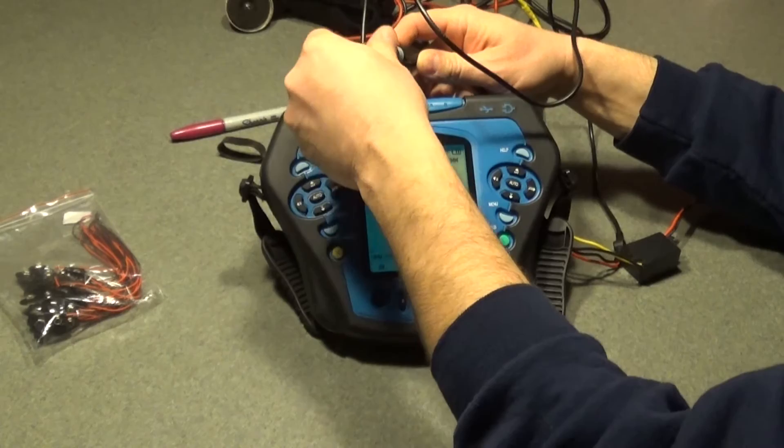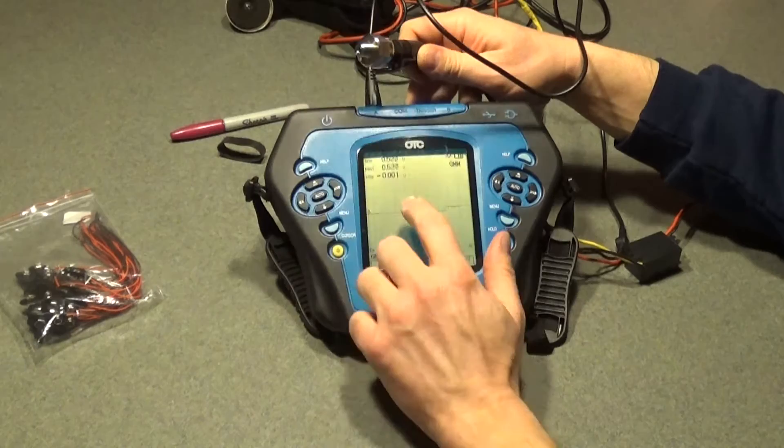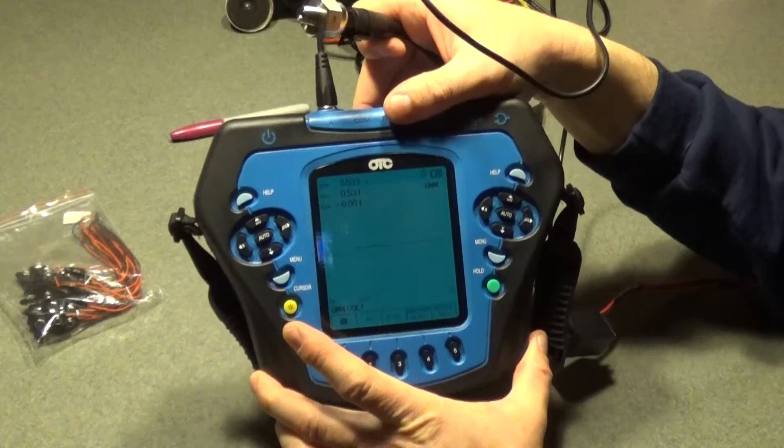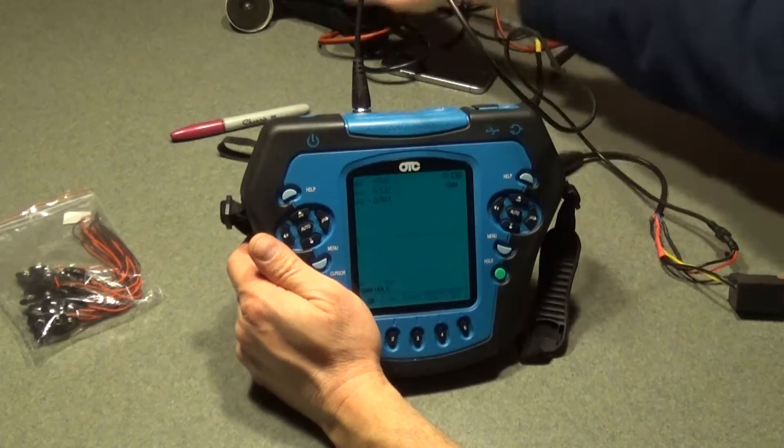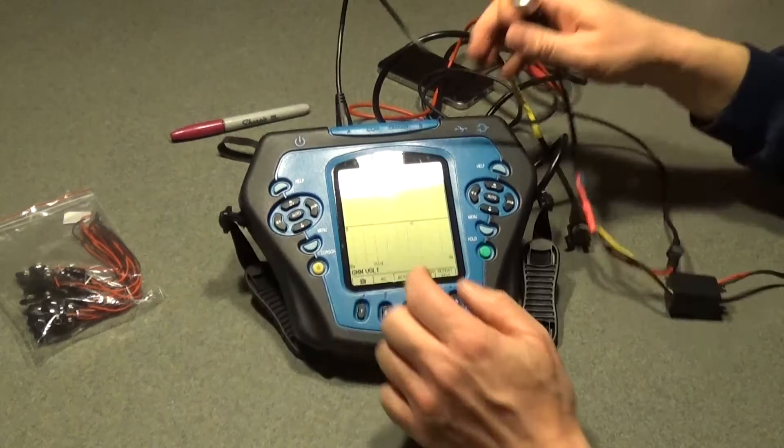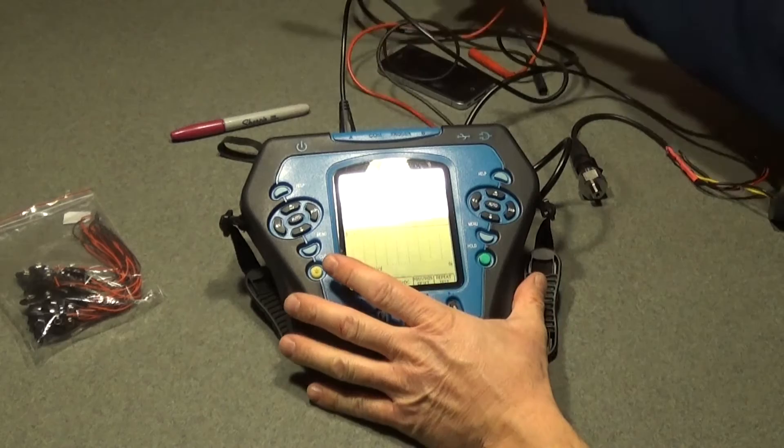So zero PSI is going to be like a half a volt, 500 millivolts. And 300 PSI on this one will be like four and a half volts. So you can see I have 500 millivolts on my, so this is a zero PSI. Okay. And now I'm going to get my air compressor and I'm going to put some pressure on the pressure transducer so you can see that in our signal.